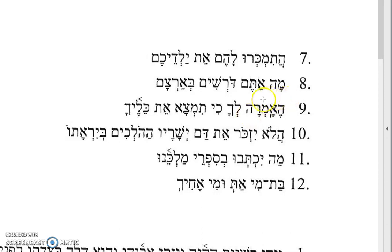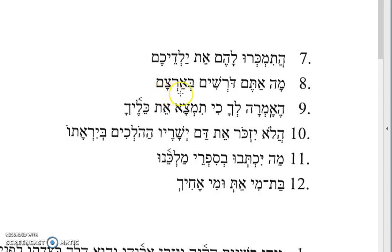Number eight: ma atem dorashim be-artzam. Ma is the interrogative word meaning what. Atem is you masculine plural. Dorashim is a Kal participle masculine plural from darash, to seek. Artzam is eretz plus the suffix am, meaning their land. So: what are you seeking in their land?